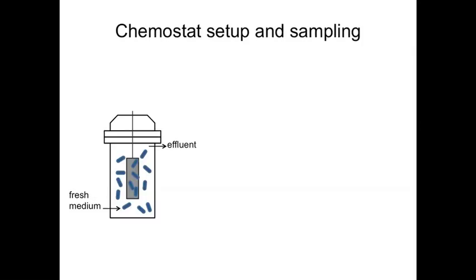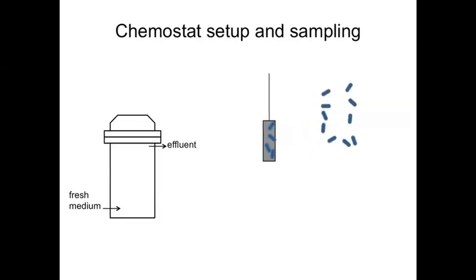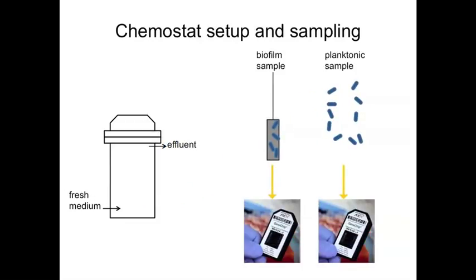We placed a piece of non-reactive graphite paper in the bioreactor as a surface for the cells to attach to. After inoculating B-theta into the reactor and allowing it to grow to a stable phase, we sampled from the surface and liquid separately, then measured whole transcriptome gene expression using Affymetrix gene chips.